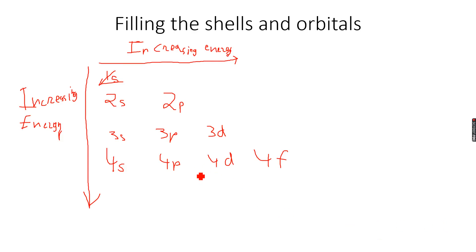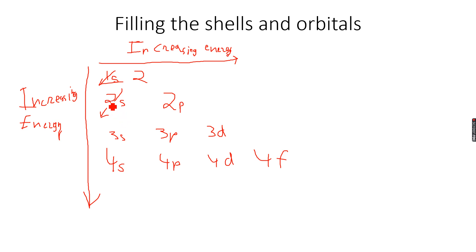We know that the 1s orbital has the lowest energy, so it will be the first orbital to fill. Then the 2s orbital — once the 1s orbital is full, we move on to the 2s orbital. After filling two electrons we move to the 2s orbital, then 2p, then 3s, then 3p, and then the 4s orbital.